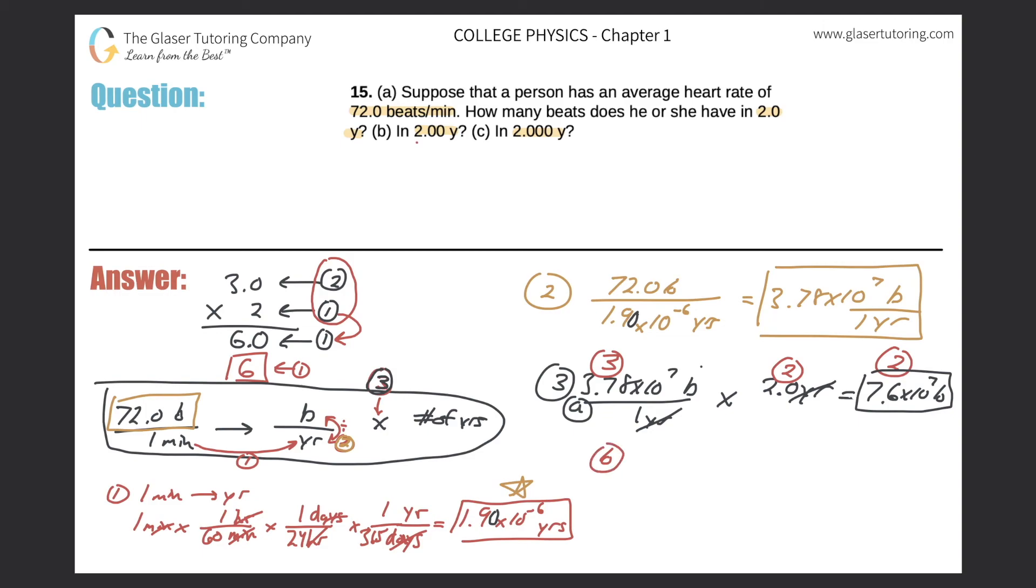Now for part b, the only difference is now if you go back to the problem, they're just now talking about 2.00 years, so we're even a little more accurate. So let's do the calculation here. It'd be 3.78 times 10 to the 7 beats per one year. I'm going to multiply that now by 2.00 years.